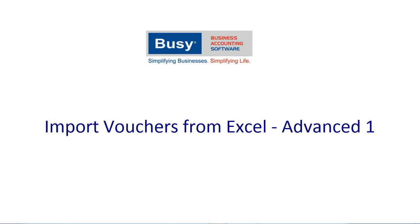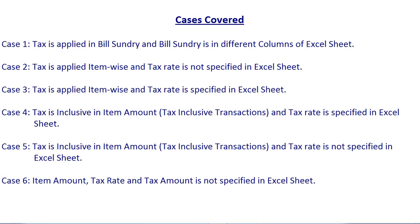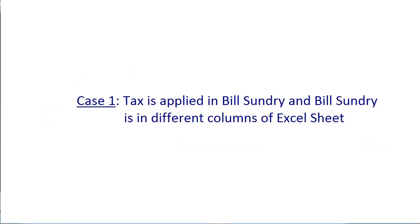There are various cases depending on which we will create different formats on how to import data to BUSY. Case 1: Tax is applied in bill sundry and bill sundry is in different columns of the Excel sheet, i.e., there is more than one tax charged in the voucher. Case 2: Tax is applied item-wise and tax rate is not specified in the Excel sheet. Case 3: Tax is applied item-wise and tax rate is specified in the Excel sheet. Case 4: Tax is inclusive in item amount and tax rate is specified in the Excel sheet. Case 5: Tax is inclusive in item amount and tax rate is not specified in the Excel sheet. Case 6: Item amount, tax rate, and tax amount are not specified in the Excel sheet — they will be picked from item master and calculated automatically.